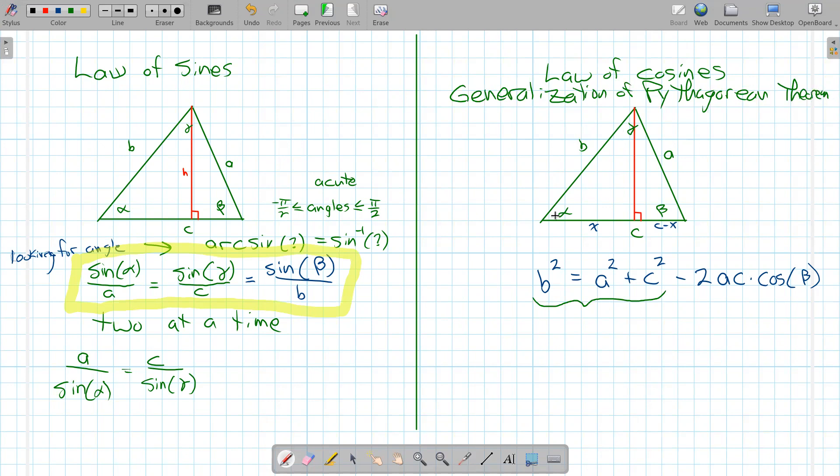What do I mean by that? Well, the Pythagorean theorem applied to right triangles, and here I've drawn a non-right triangle. So the law of cosines applies to any triangle, whether it's right or not.